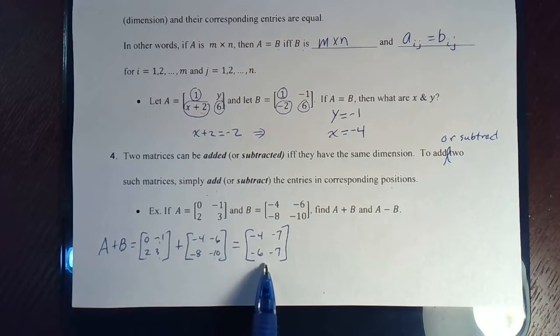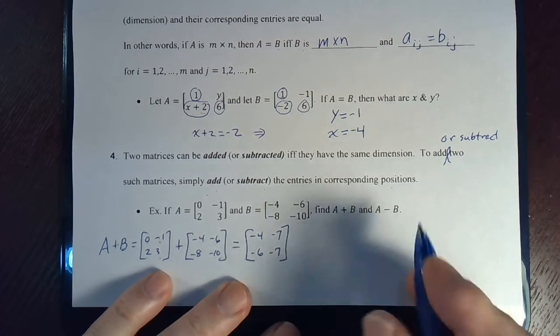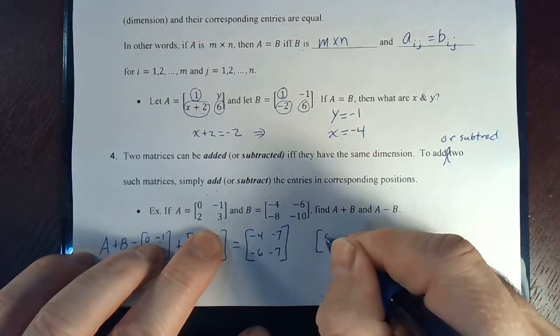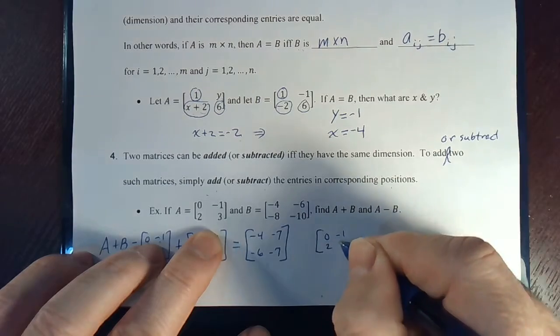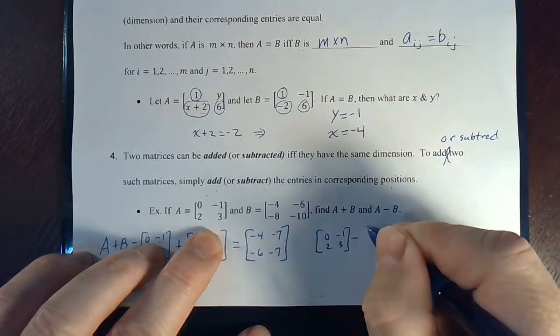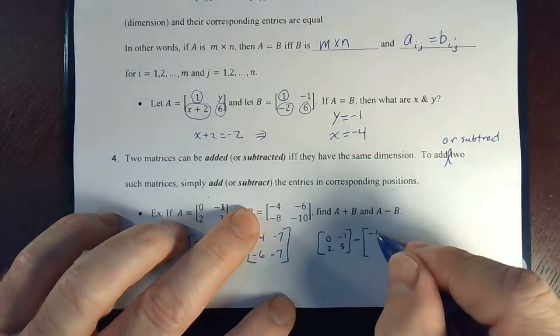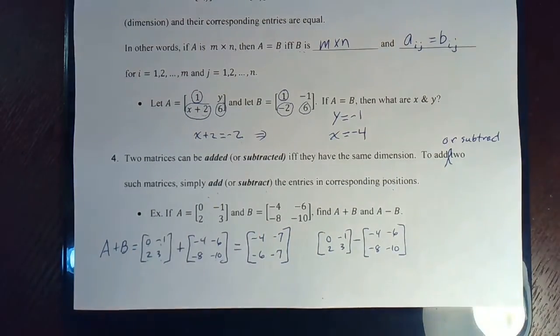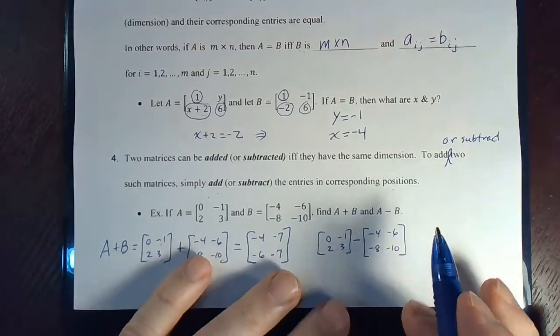So, this matrix is A plus B, A and B added together. A minus B would be 0, negative 1, 2, 3, minus negative 4, negative 6, negative 8, negative 10. And all we're going to do is subtract instead of add. So, be careful here.